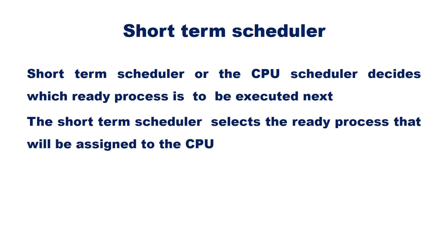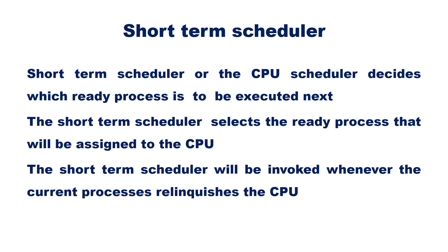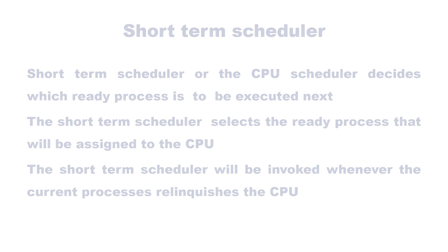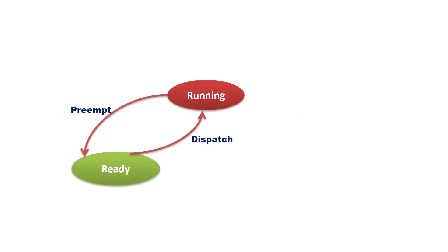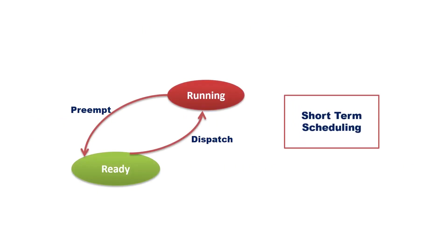The short-term scheduler selects the ready process that will be assigned to the CPU. The short-term scheduler will be invoked whenever the current process relinquishes the CPU. It selects one process from the ready state to be moved to the running state.